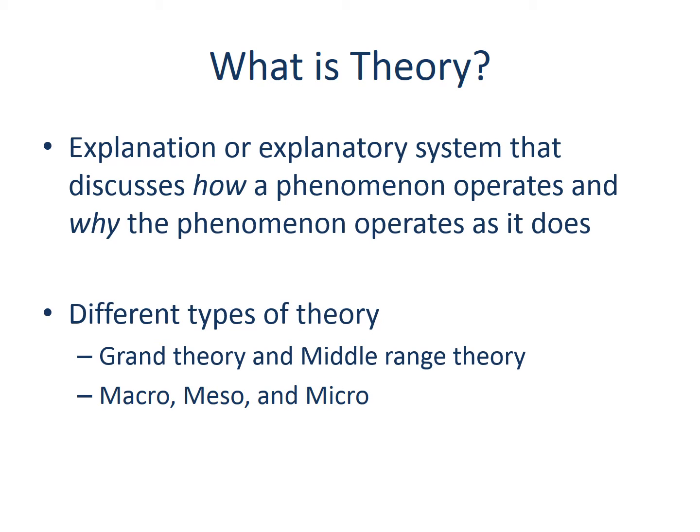We can also classify theories based on the level that a theory explains. Macro theory covers larger social systems such as state, country, or even the world. Meanwhile, when theories are used to study small groups or individuals — say a couple, family, or team — they are referred to as micro-theories. Meso-theory refers to the middle range between the two.